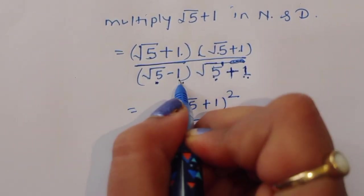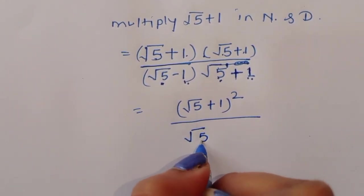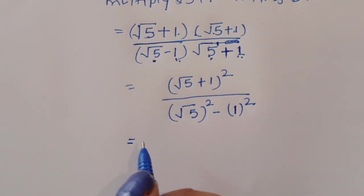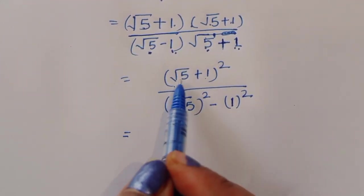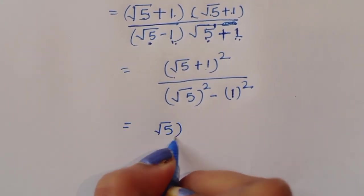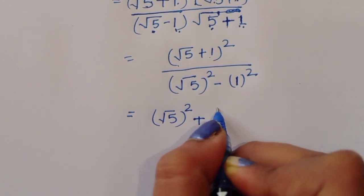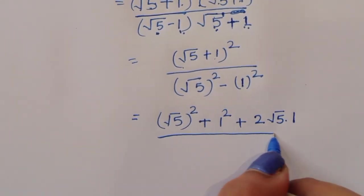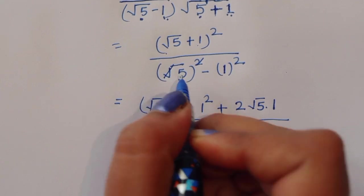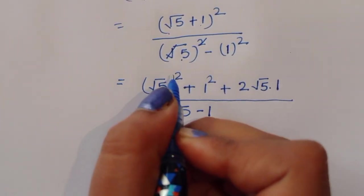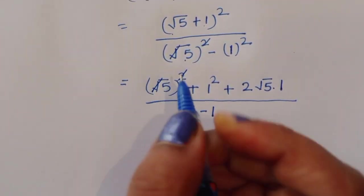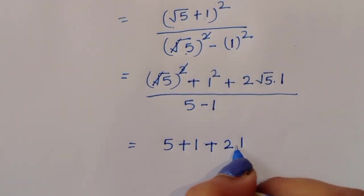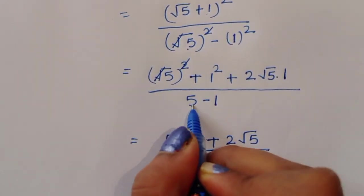We use the formula a plus b whole square equals a square plus b square plus 2ab. So the numerator becomes: square root of 5 squared, that is 5, plus 1 squared, that is 1, plus 2 times square root of 5 times 1. The denominator is a square minus b square, which is square root of 5 squared minus 1 squared, giving us 5 minus 1 equals 4.